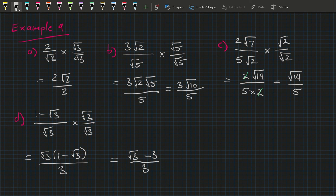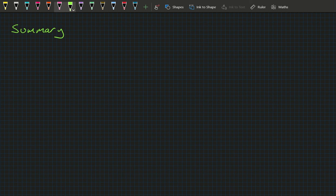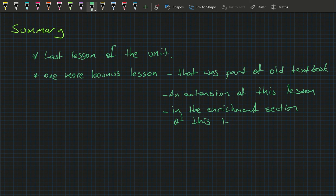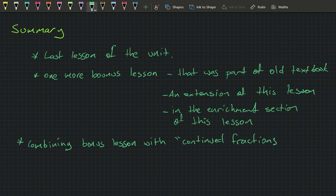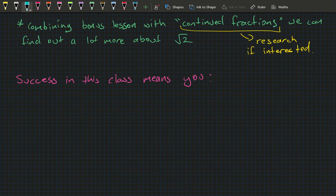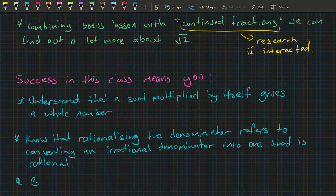Pause the video and work on questions 1, 2, 4, 5, and 6 in the new book, or questions 6, 7, and 8 in the old book. This is technically the last lesson of the unit, but there's a bonus class on continued fractions that explores more about the square root of 2. To succeed: understand that a surd multiplied by itself gives a whole number, know what rationalizing the denominator means, and be able to rationalize the denominator. Good luck and see you next time.